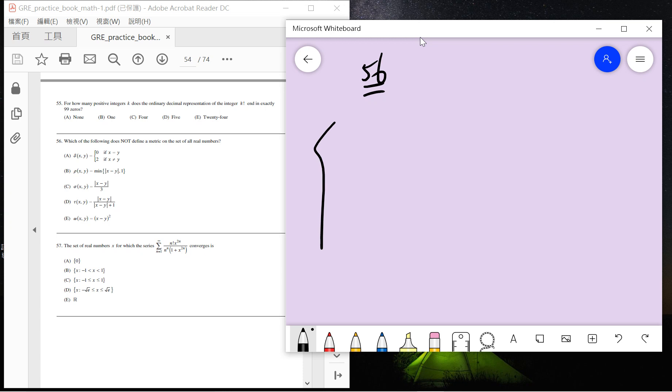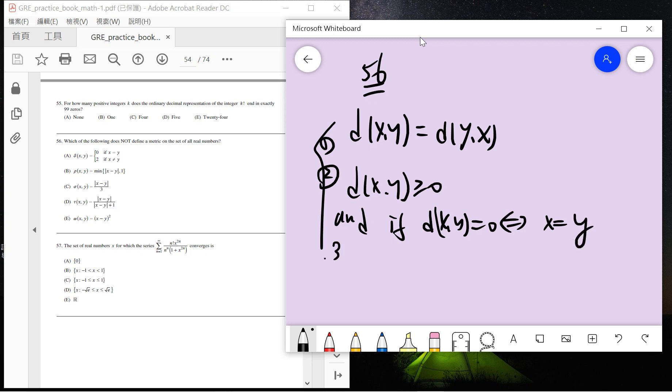So remember the metric contains three properties. One is the metric needs to be symmetric. Second is the matrix needs to be larger than zero, and if d is zero, implies x equals y. And the third one is d(x,y) plus d(y,z) needs to be larger than d(x,z). Triangular inequality.